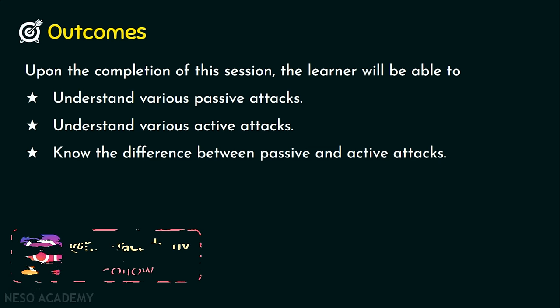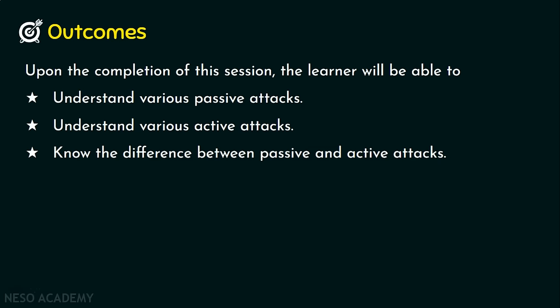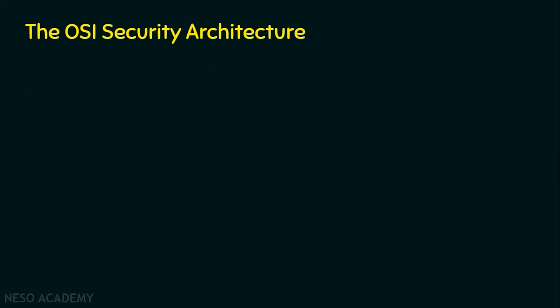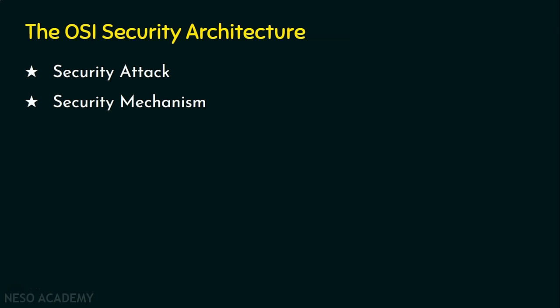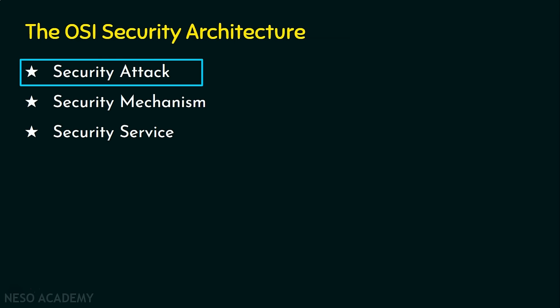Before we step into passive and active attacks, we will revisit the OSI security architecture. The OSI security architecture has three key components: number one, the security attack; number two, the security mechanism; and number three, security service. In today's lecture, we are going to focus on security attack.